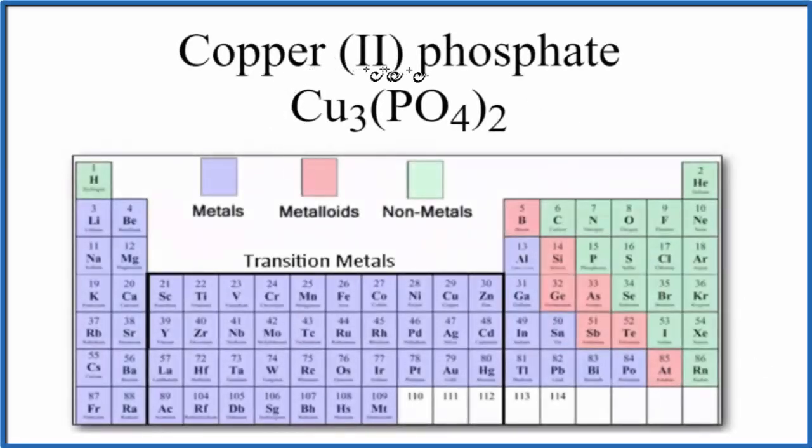In this video, we'll look at whether copper(II) phosphate, that's Cu3(PO4)2, is ionic or covalent.